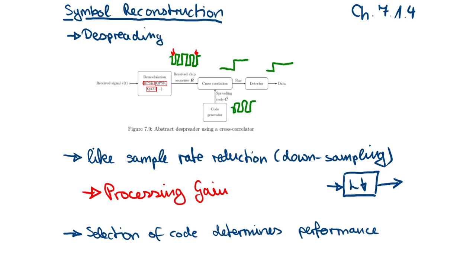By de-spreading signals we get a processing gain, and this processing gain is obtained in all spread spectrum techniques. This processing gain is also the benefit we discussed in the first video — the reason why we use spread spectrum methods. One important point is that the selection of code determines the performance of spread spectrum: not every code yields the desired properties. The construction of spreading codes is a topic in digital communication systems, but it is out of scope for this lecture.